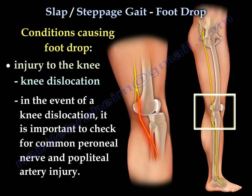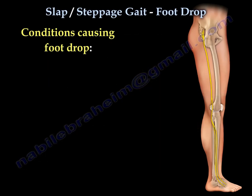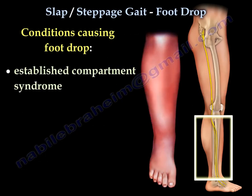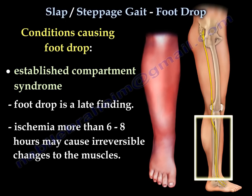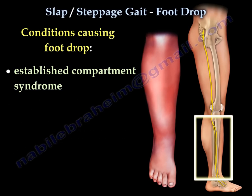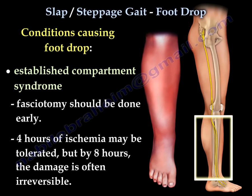Foot drop may also occur due to knee dislocation. In the event of a knee dislocation, it is important to check for common peroneal nerve and popliteal artery injury, and to rule out compartment syndrome. Foot drop is a late finding — ischemia of more than six to eight hours may cause irreversible changes to the muscles. Fasciotomy should be done early; four hours of ischemia may be tolerated, but by eight hours the damage is often irreversible.